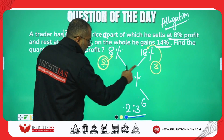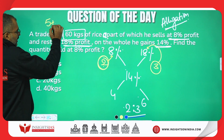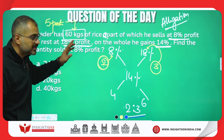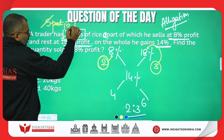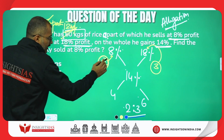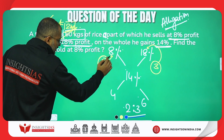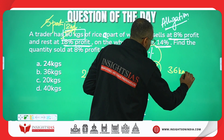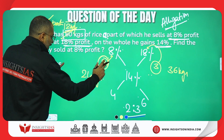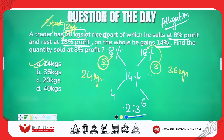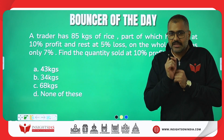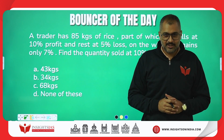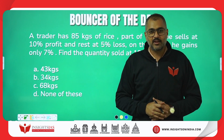Two parts plus three parts equals five parts total. The given quantity is 60 kg divided into five parts. Two parts sold at 8% profit is 24 kg, and three parts is the remaining 36 kg. So the quantity sold at 8% profit is 24 kg — option A. A very similar question is being asked with a little change — try to understand it and post the answer in the comment section. Thank you and I'll see you in the next video with a unique question and technique.